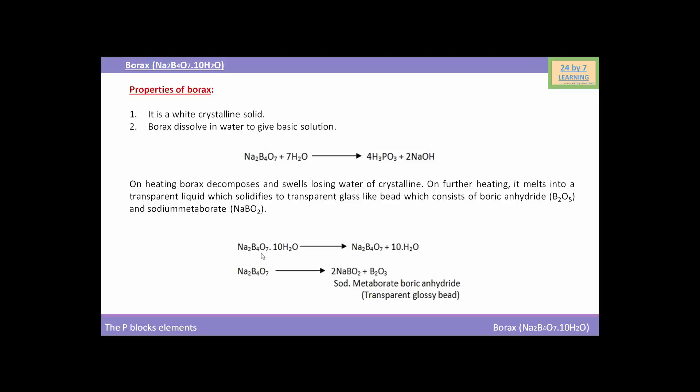You can see Na2B4O7·10H2O, i.e. borax, on heating will convert into Na2B4O7 and 10H2O, i.e. it will lose its water of crystallization on heating. And on further heating, this Na2B4O7, i.e. anhydrous borax, will solidify to transparent glass-like bead which consists of boric anhydride B2O3 and sodium metaborate NaBO2.